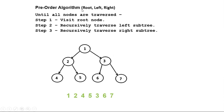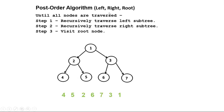Here is the pre-order algorithm (root, left, right): visit root, recursively traverse left subtree, then recursively traverse right subtree. In this example, we start with root one, then recursively traverse the left subtree — root two, then left and right: four, five — and then we start with the root again. In the post-order algorithm (left, right, root): recursively traverse left subtree, recursively traverse right subtree, then visit the root. The sequence is four, five, two, six, seven, three, one according to post-order traversal.